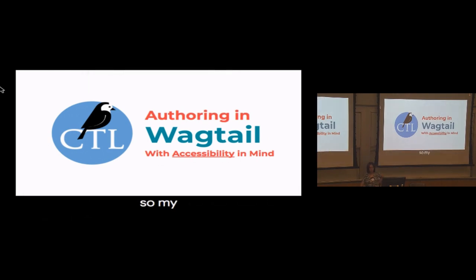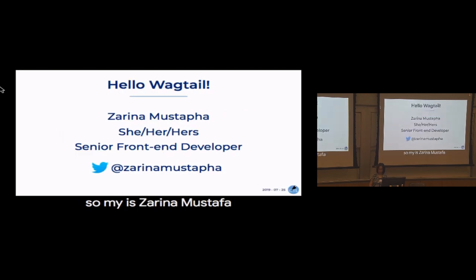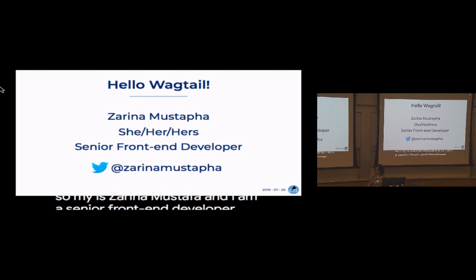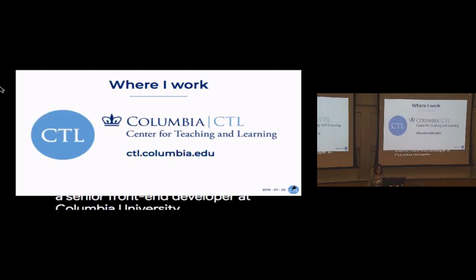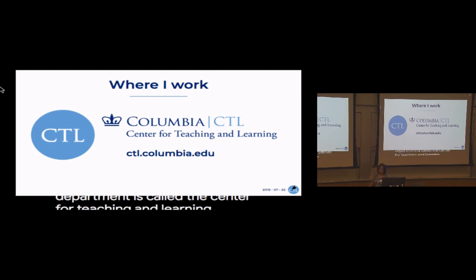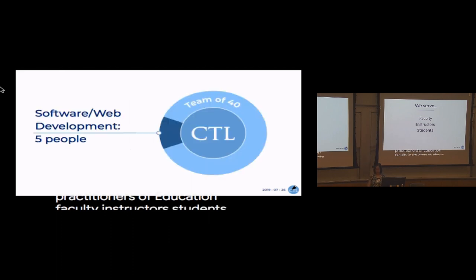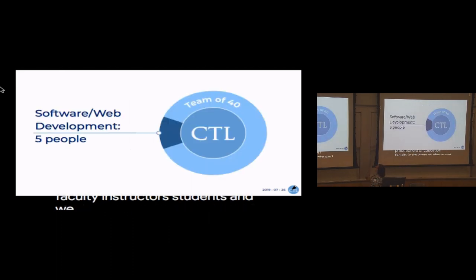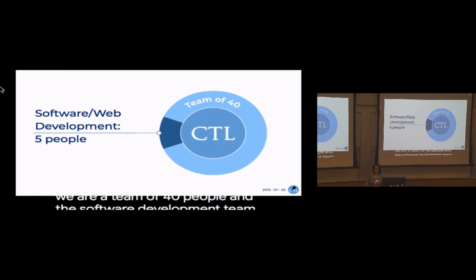My name is Zarina Mustafa and I am a senior front-end developer at Columbia University. My department is called the Center for Teaching and Learning, and what we do is we serve the community of practitioners of education — faculty, instructors, students. We are a team of 40 people and the software development team is five people.